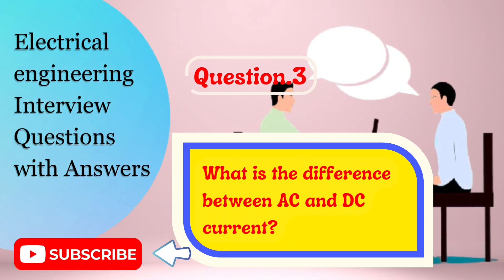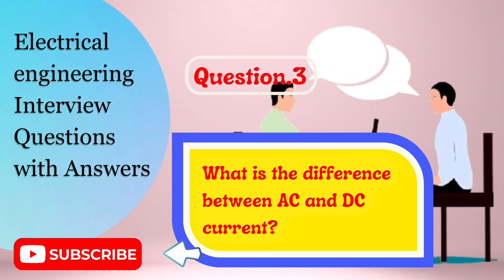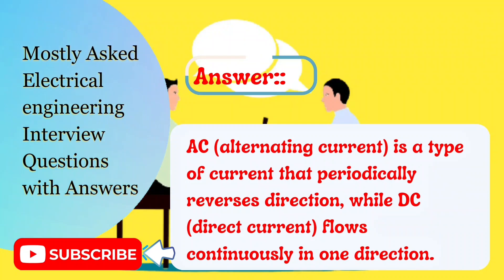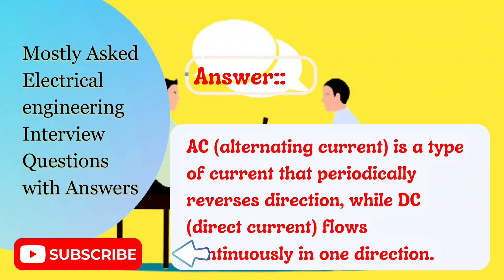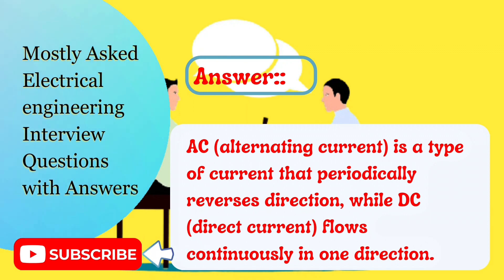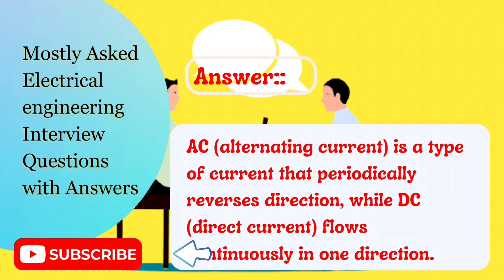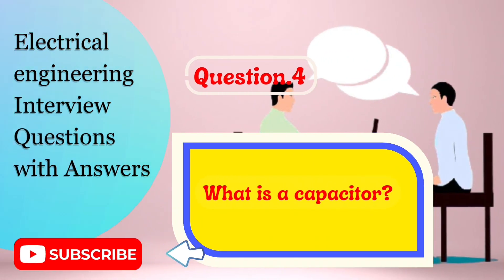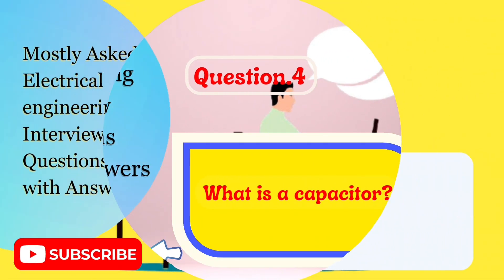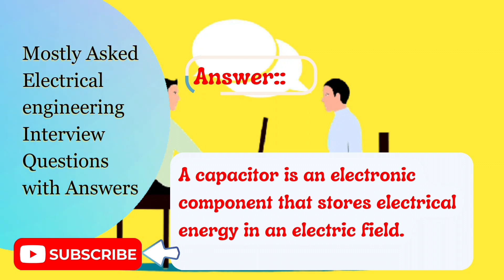Question 3: What is the difference between AC and DC current? AC, alternating current, is a type of current that periodically reverses direction, while DC, direct current, flows continuously in one direction. Question 4: What is a capacitor? A capacitor is an electronic component that stores electrical energy in an electric field.